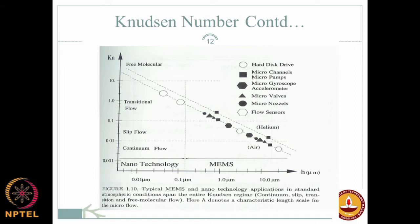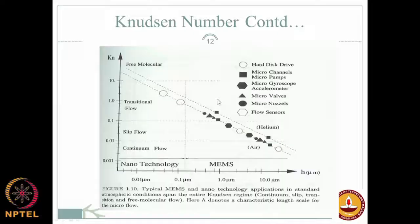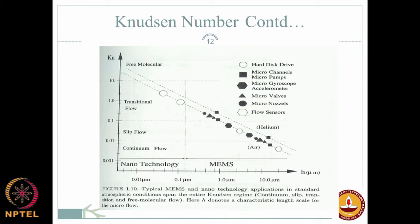For micro channels with gas flow, it is quite likely the Knudsen number can exceed 0.1 — crossing into the slip or transitional regime. In that case, you can still probably use Navier-Stokes but must account for slip conditions at the boundary through corrections. Micro channels with liquid flow remain in the continuum range because the mean free paths of liquids are smaller.